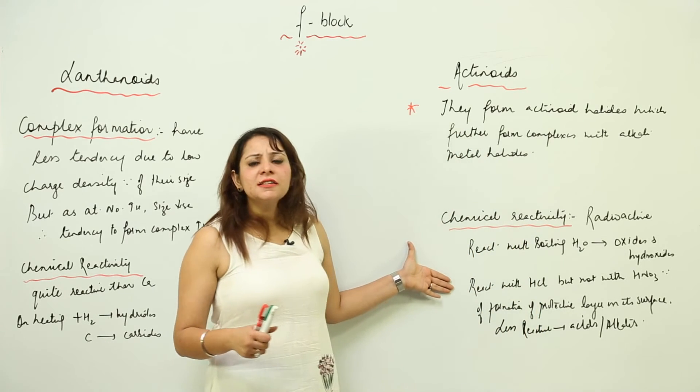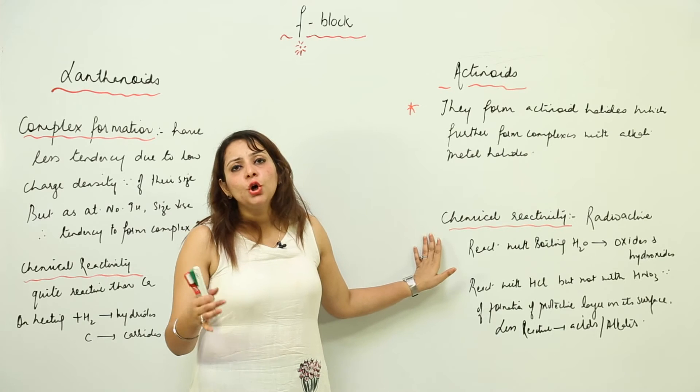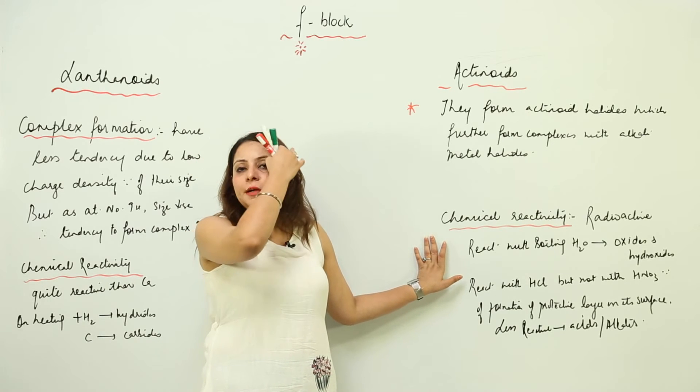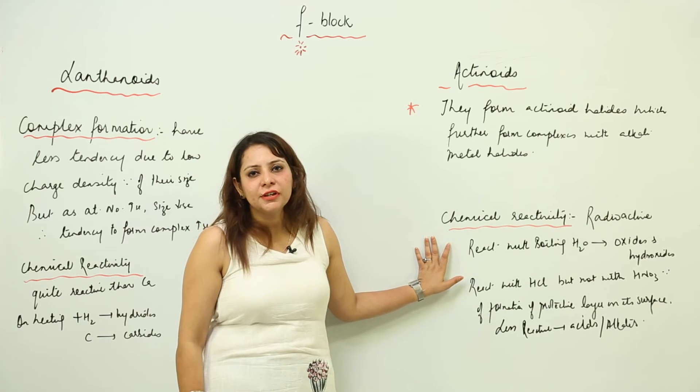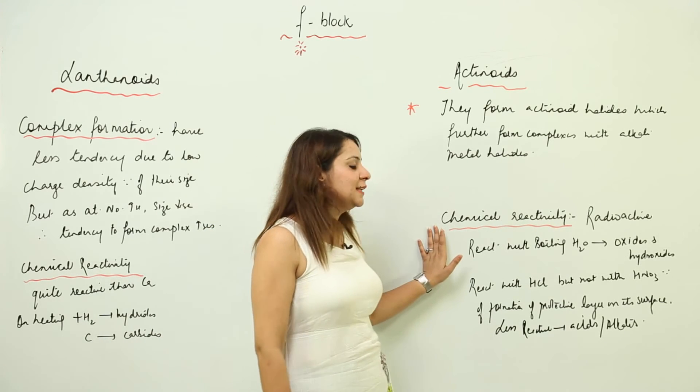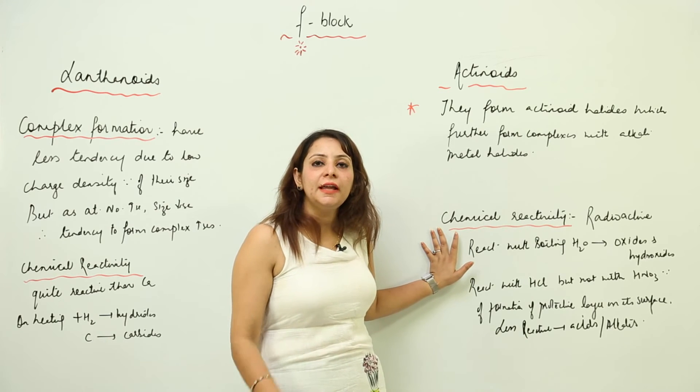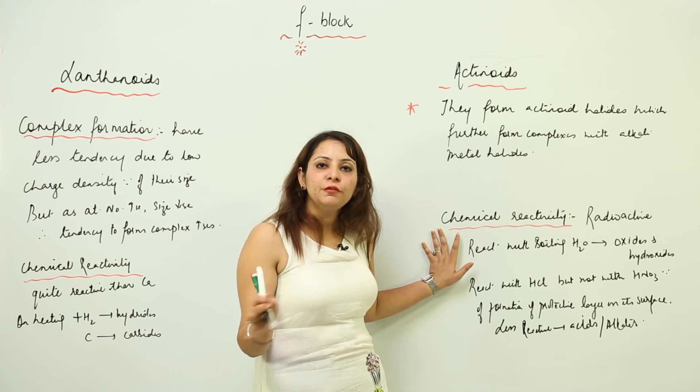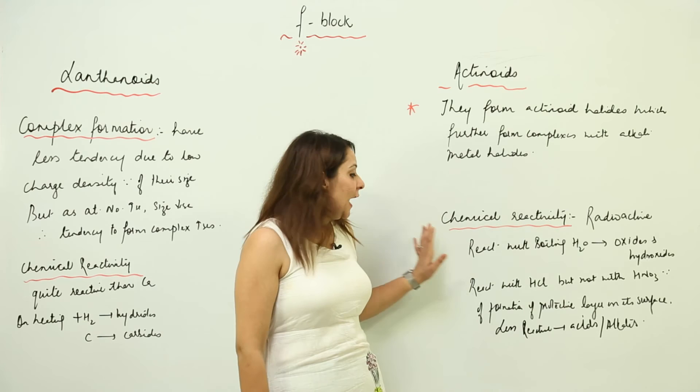For actinoids, they are radioactive, so the study of their chemistry is very difficult in lab because they are difficult to handle as they are radioactive. But still we know that they also get tarnished in air. When they are exposed to air, they form their oxides and get tarnished.